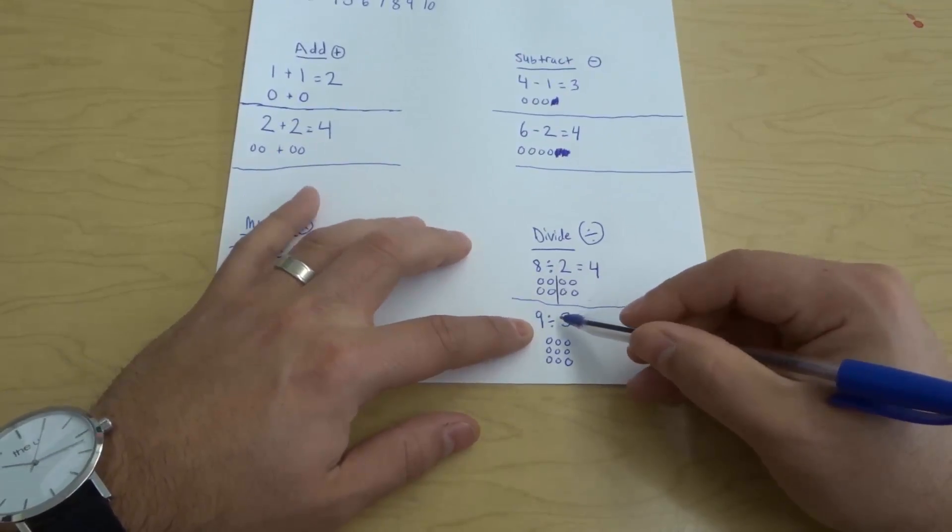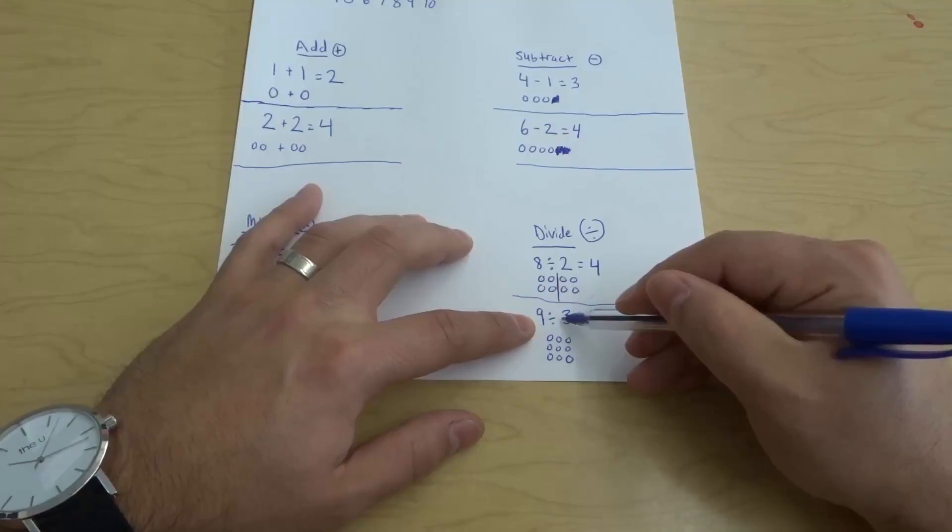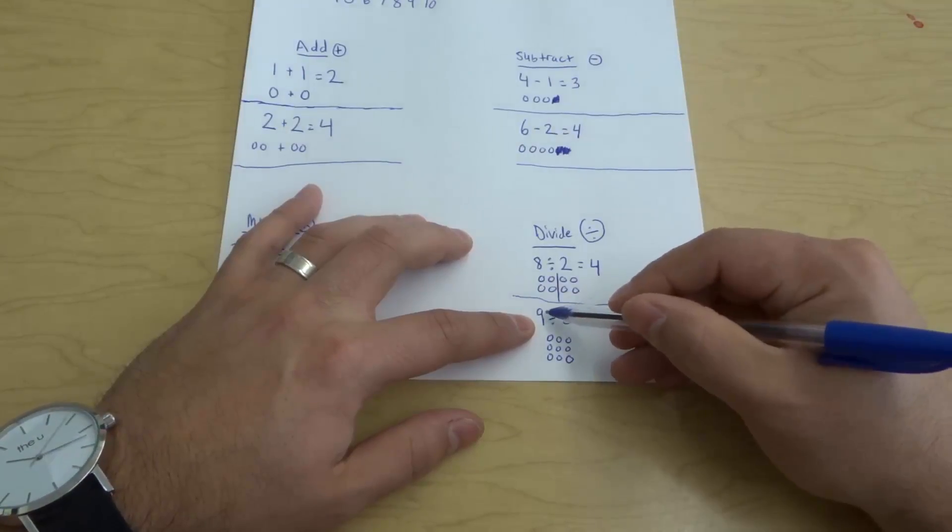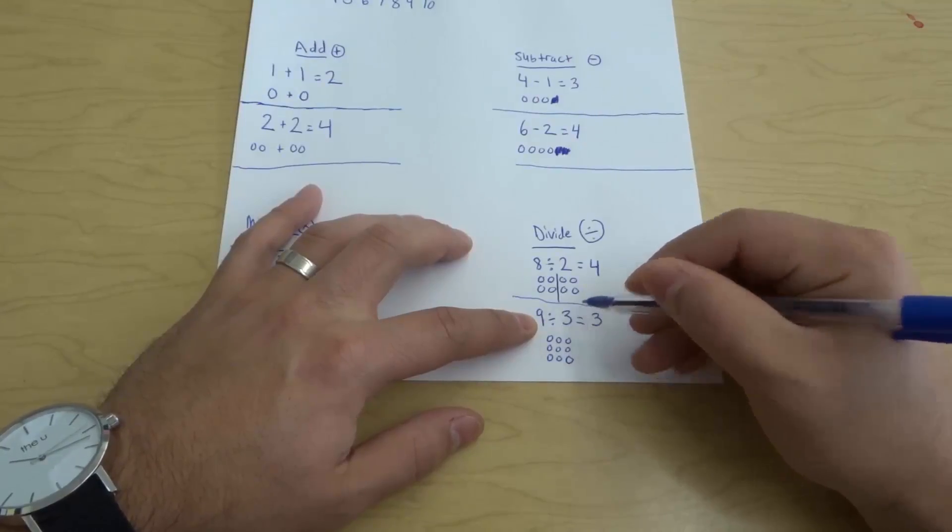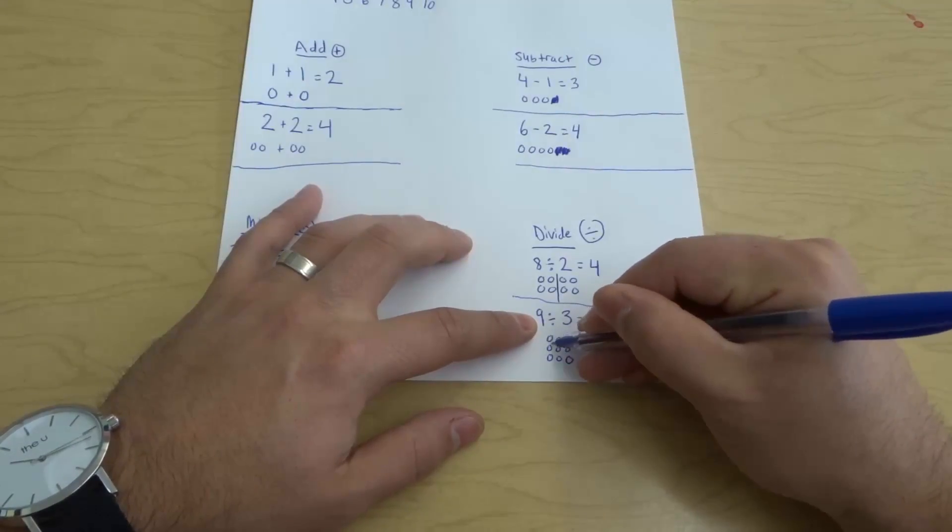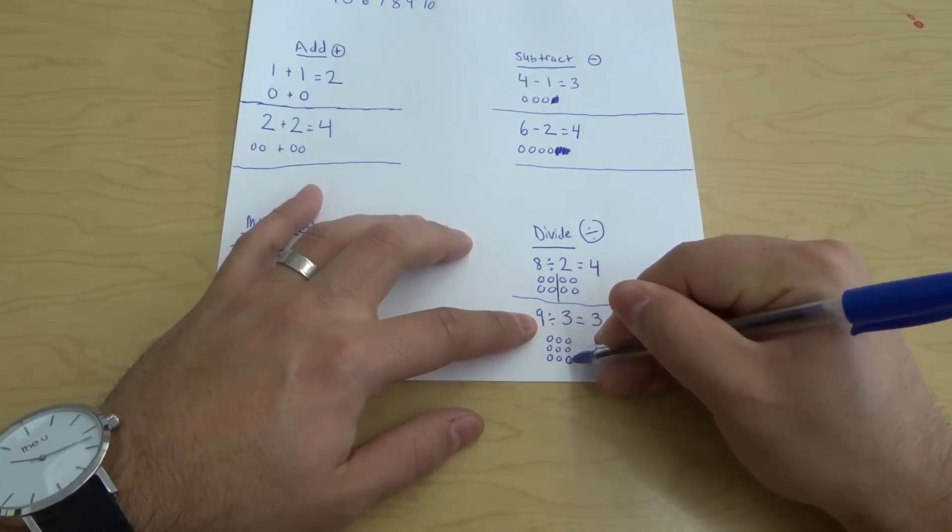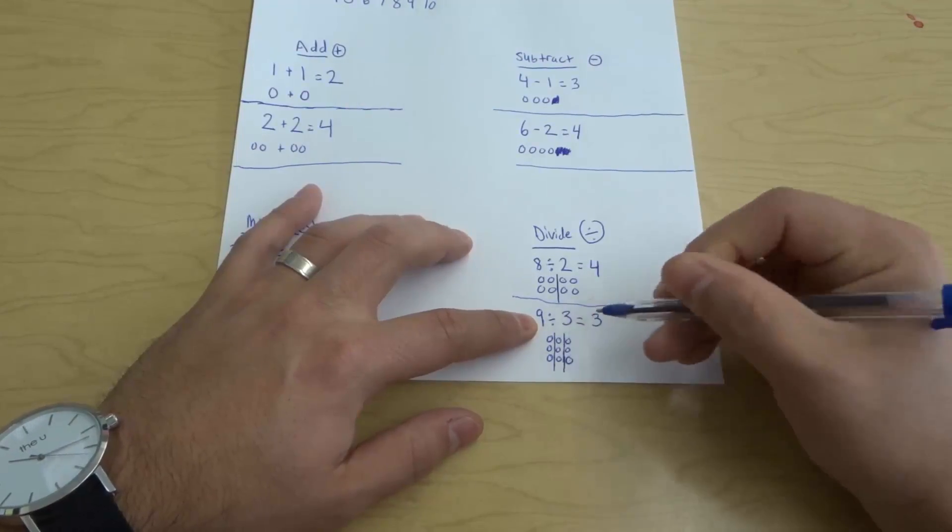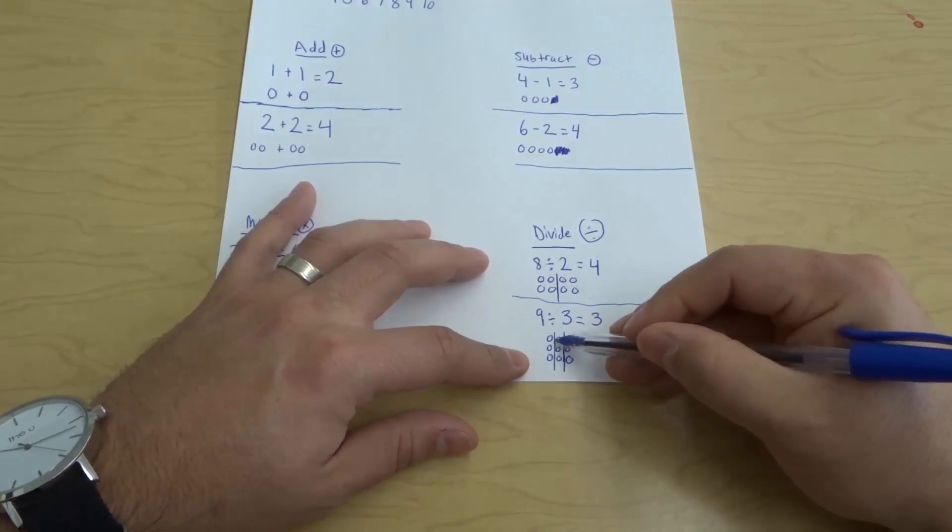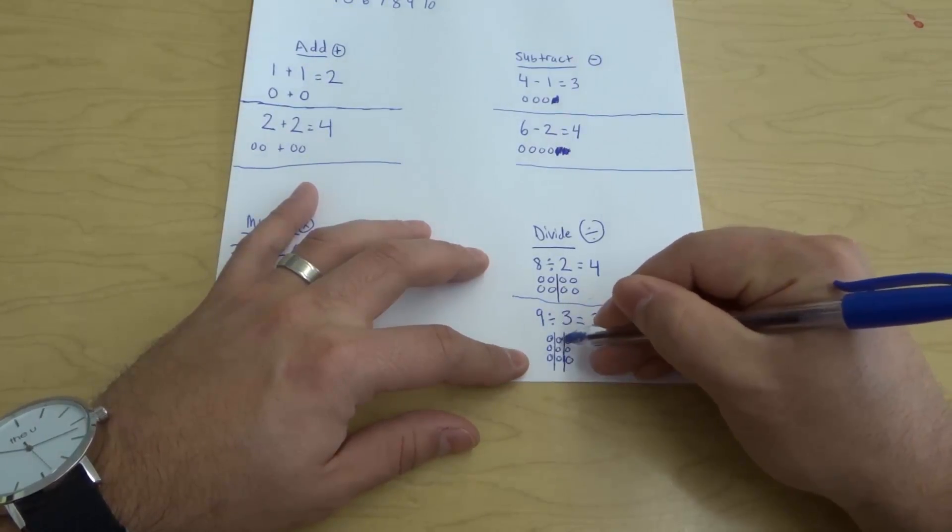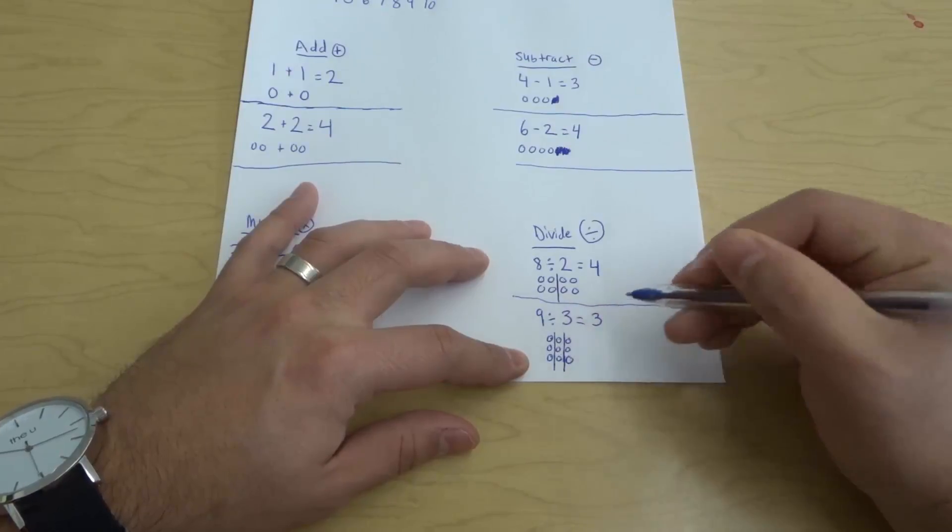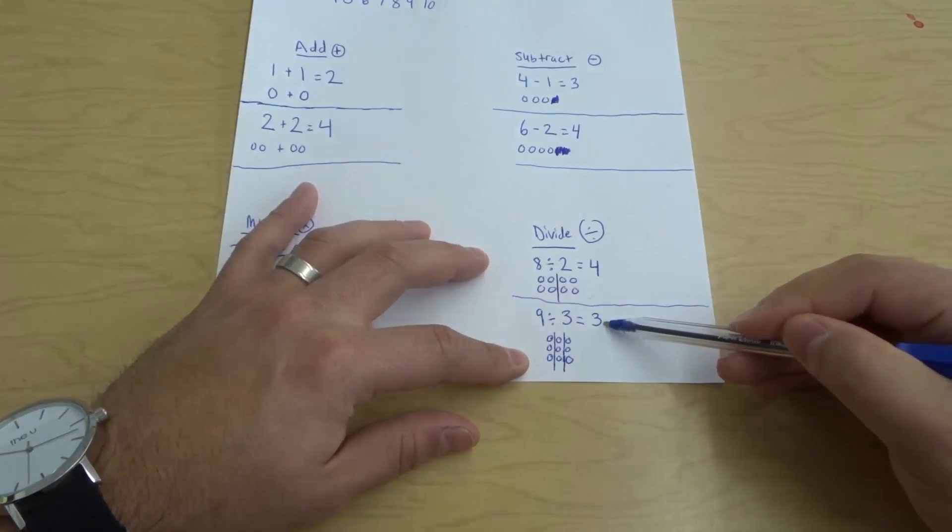Now last but not least, here's another example: 9 divided by 3. So once again, we're going to start off with 9 and we're going to break that 9 up into 3 equal groups. So I have 9 right here: 1, 2, 3, 4, 5, 6, 7, 8, 9. I'm going to draw 2 lines to break this up into 3 different groups. And now we have 3 equal groups. And in each group, we have 3: 1, 2, 3, 1, 2, 3, 1, 2, 3. That means that our answer is going to be 3.